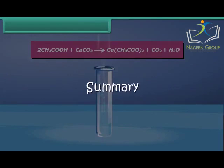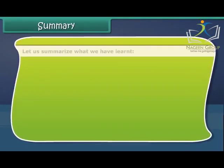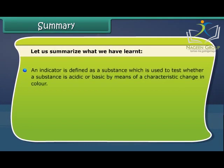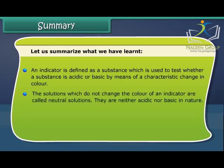Let us summarize what we have learned. An indicator is defined as a substance which is used to test whether a substance is acidic or basic by means of a characteristic change in color. The solutions which do not change the color of an indicator are called neutral solutions.